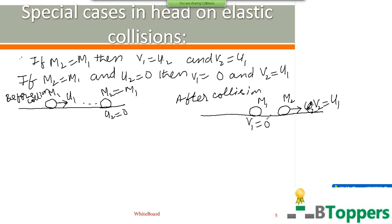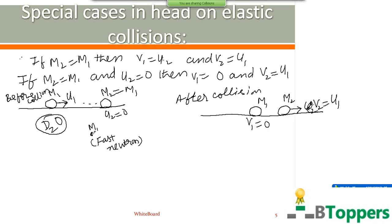We should not use heavier nuclei as moderator, because if a heavier nucleus is the moderator, the neutrons rebound back almost with the same speed. Heavy water D2O is used as moderator. The nucleus of deuterium has mass approximately two times the mass of a neutron. You need not copy this part of the discussion — it is just to listen. I will show you the notes separately.